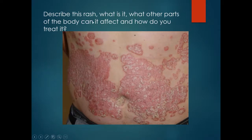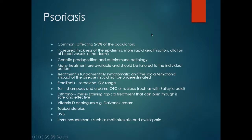Describe this rash — what is it, what other parts of the body can it affect, and how do you treat it? This is an erythematous plaque-like rash with adherent scale on the trunk. This is psoriasis.